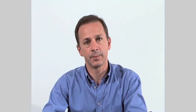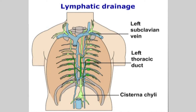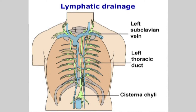Another circulatory mechanism which works in close association with the cardiovascular system is the lymphatic system. Lymphatic fluid from the tissues and the gastrointestinal tract return to join the blood through the right and left thoracic ducts. These then join onto the respective subclavian veins.